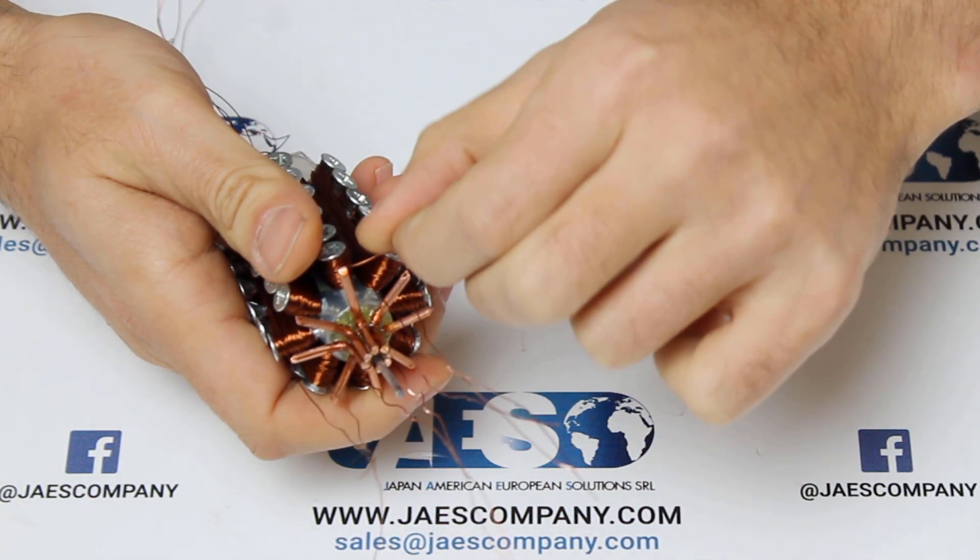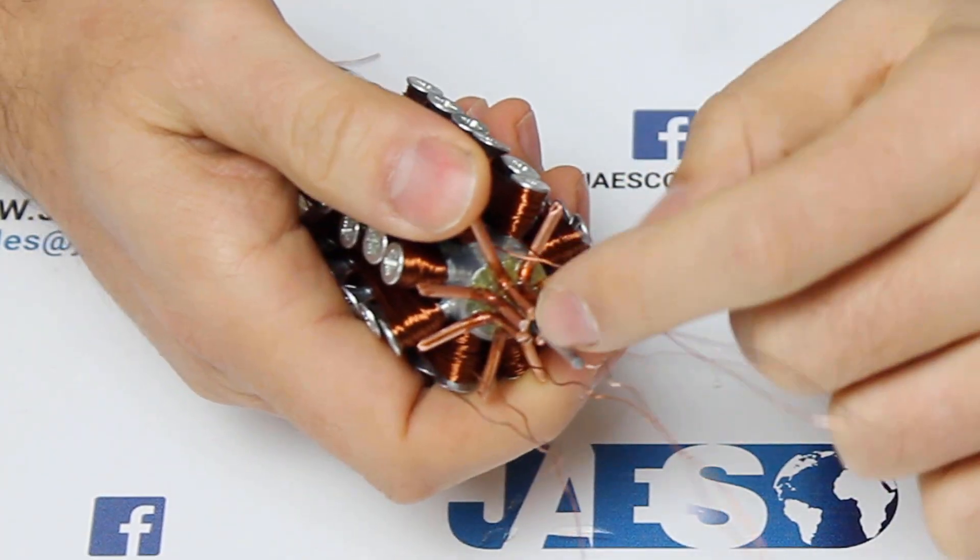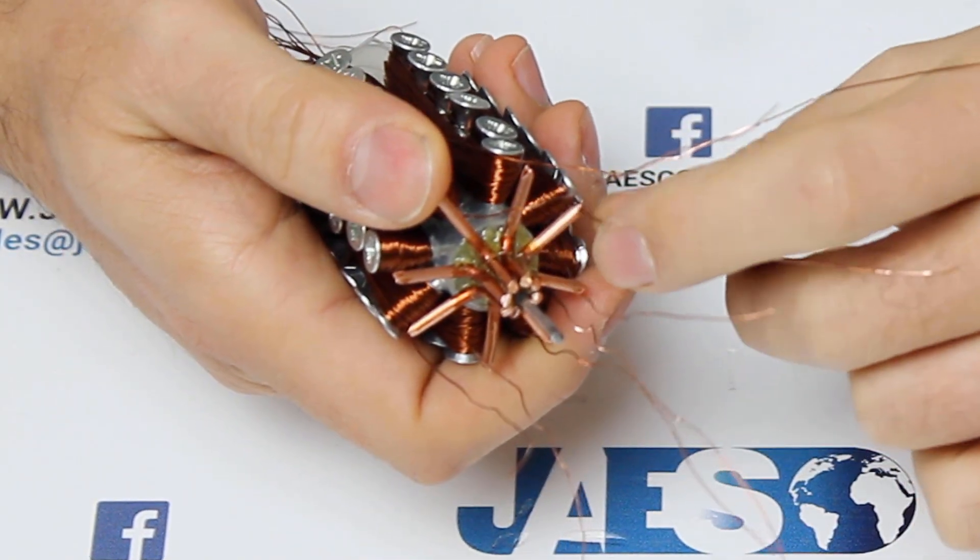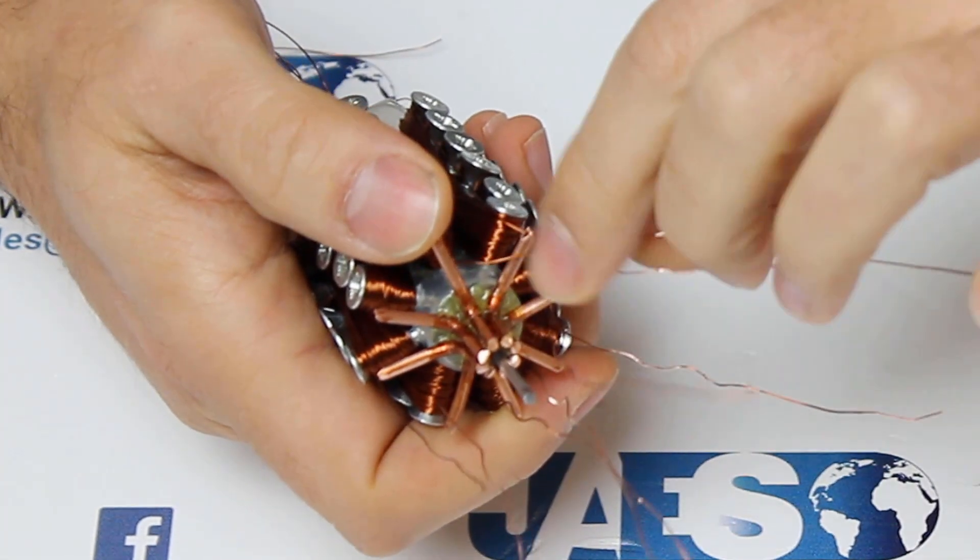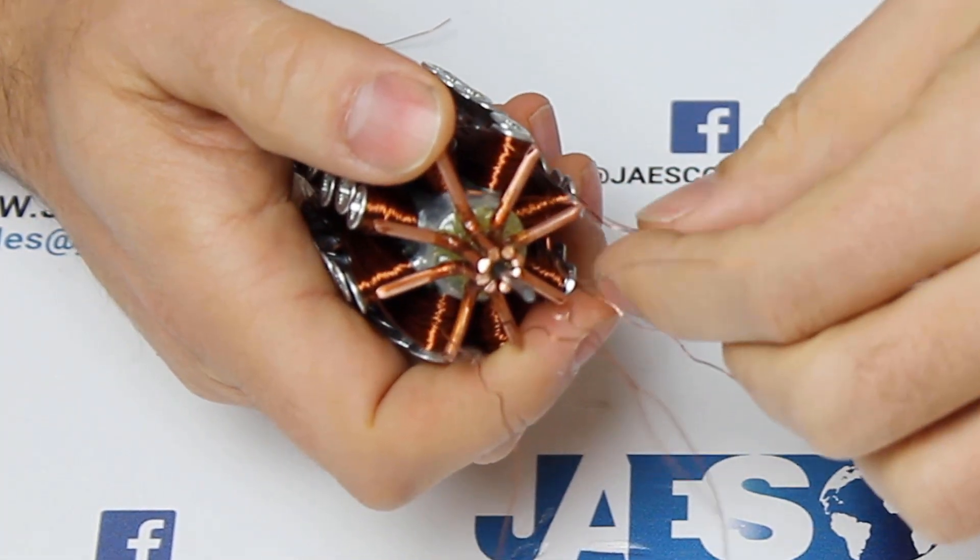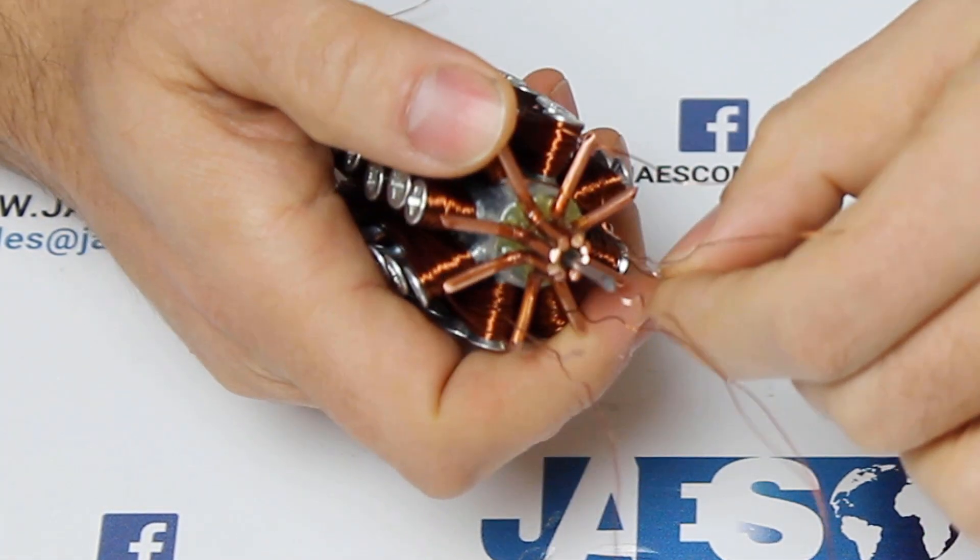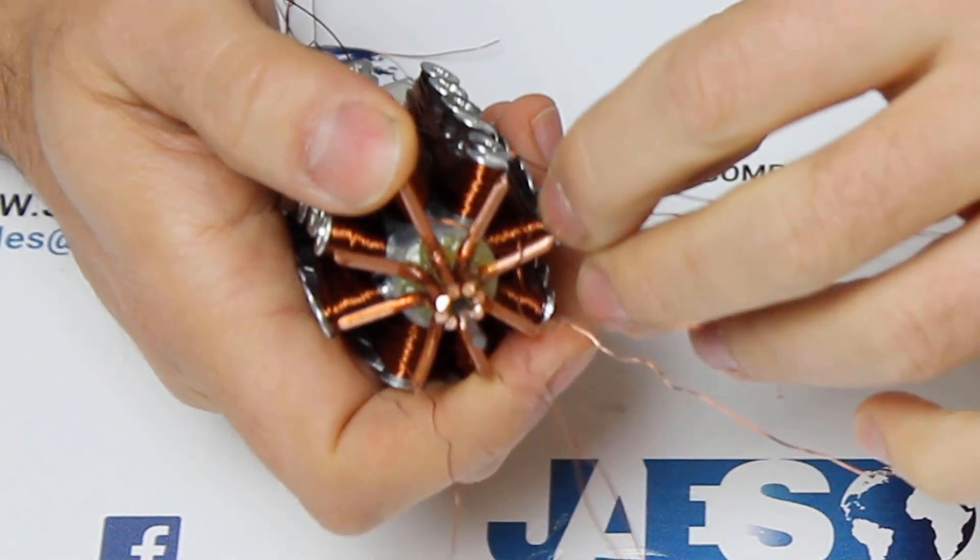Again, this step is essential for the functioning of our engine. We have to wrap the input wires of each row, not around their upper copper angle bracket, but around the next bracket on their left, creating a 90 degrees angle.